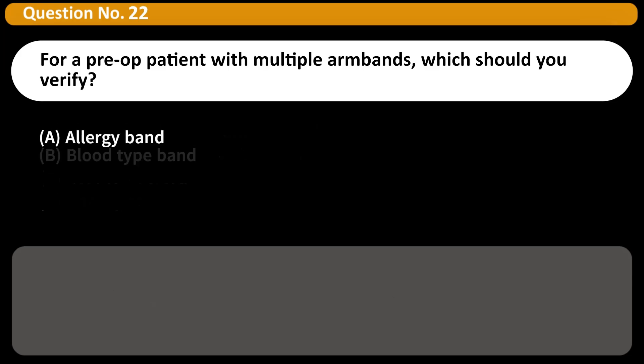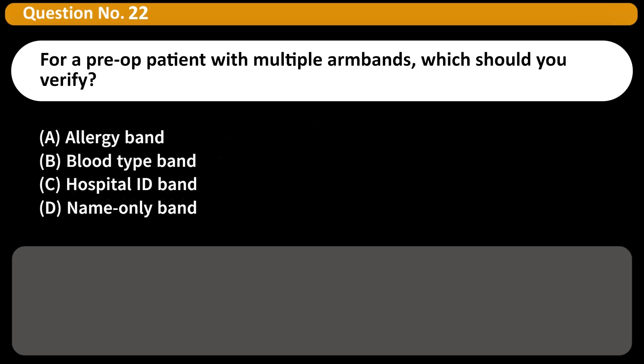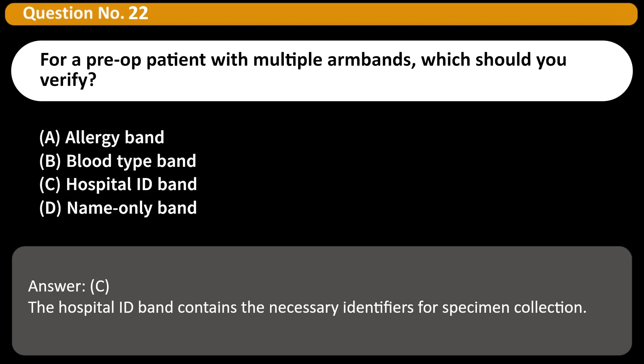For a pre-op patient with multiple arm bands, which should you verify? A. Allergy band. B. Blood type band. C. Hospital ID band. D. Name only band. Answer: C. The hospital ID band contains the necessary identifiers for specimen collection.